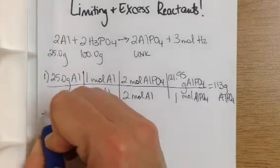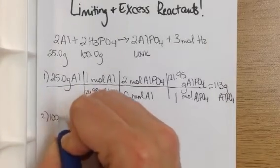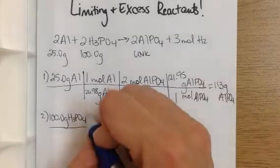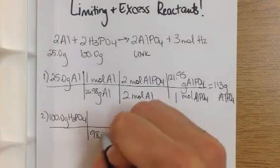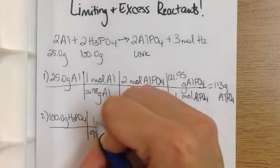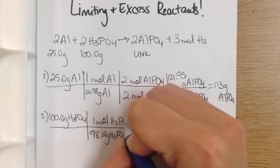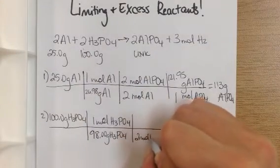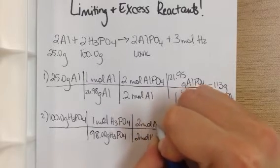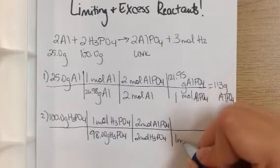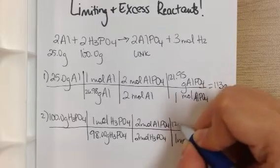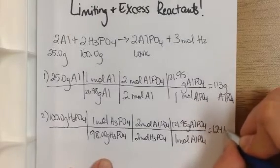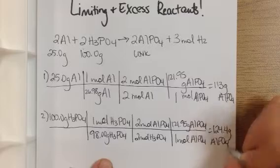So I'm going to do the same thing with my phosphoric acid given. So 100 grams of H3PO4, going to this time the same product, but I need to use different molar masses. So my molar mass for phosphoric acid is 98 per mole. That is also a 2 to 2 mole ratio. And my molar mass is going to be the same for my product because I'm going to the same destination. This math works out to be 124.4 grams of aluminum phosphate.